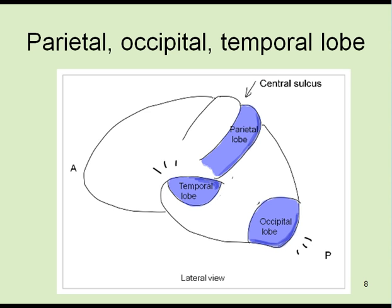This is a schema of a cerebral hemisphere. Parietal, occipital, temporal lobe locates posterior to the central sulcus.